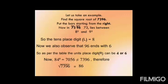For the unit's place digit, we take the number 96 which ends with 6. Referring to the table, the unit's place digit can be 4 or 6. We try 84 squared, which is 7056 — not equal to 7396. So the unit's place digit must be 6, and the square root of 7396 is 86.